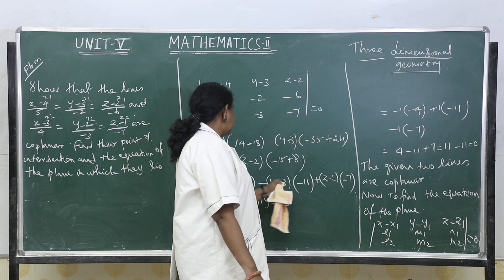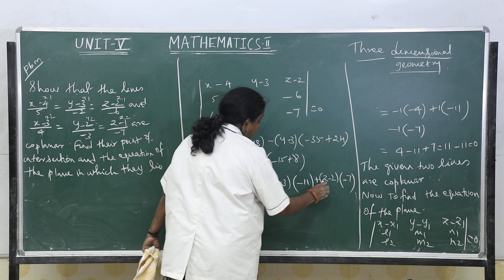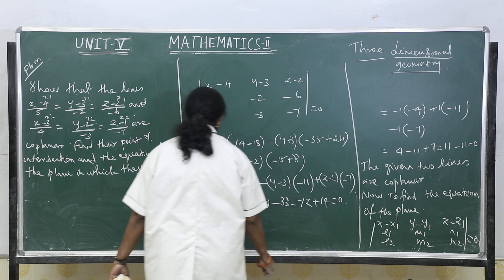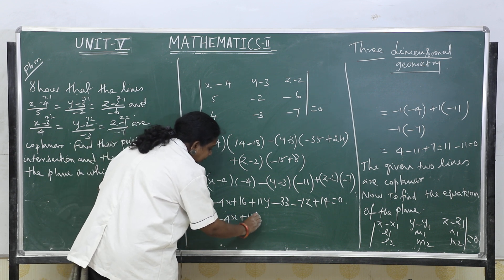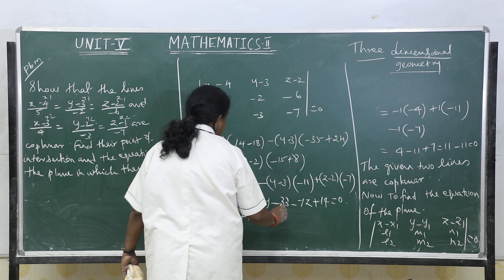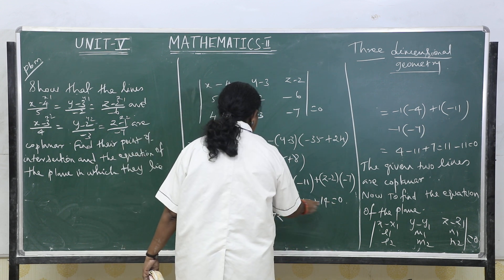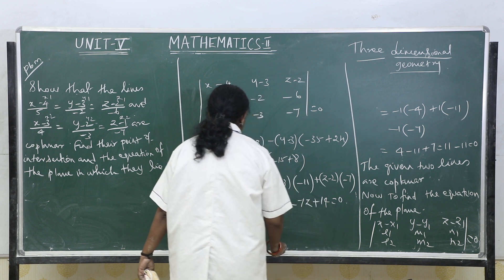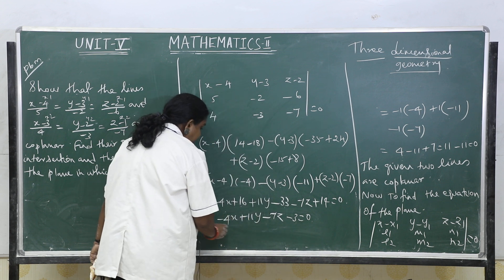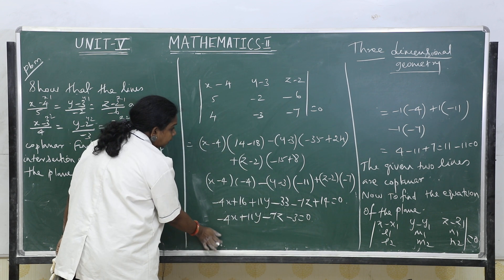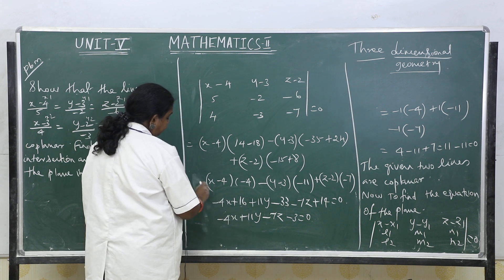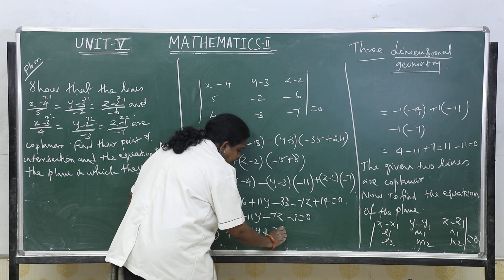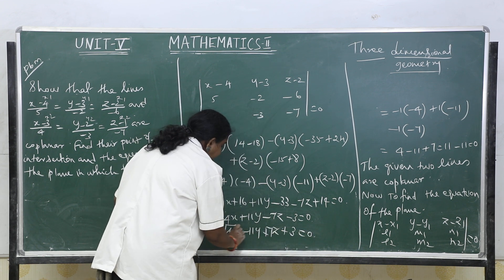Expanding further: −4x + 16 + 11y − 33 − 7z + 14 = 0. That is −4x + 11y − 7z + (16 − 33 + 14) = 0, which gives −4x + 11y − 7z − 3 = 0. Multiplying through by −1, the required equation of the plane is 4x − 11y + 7z + 3 = 0.